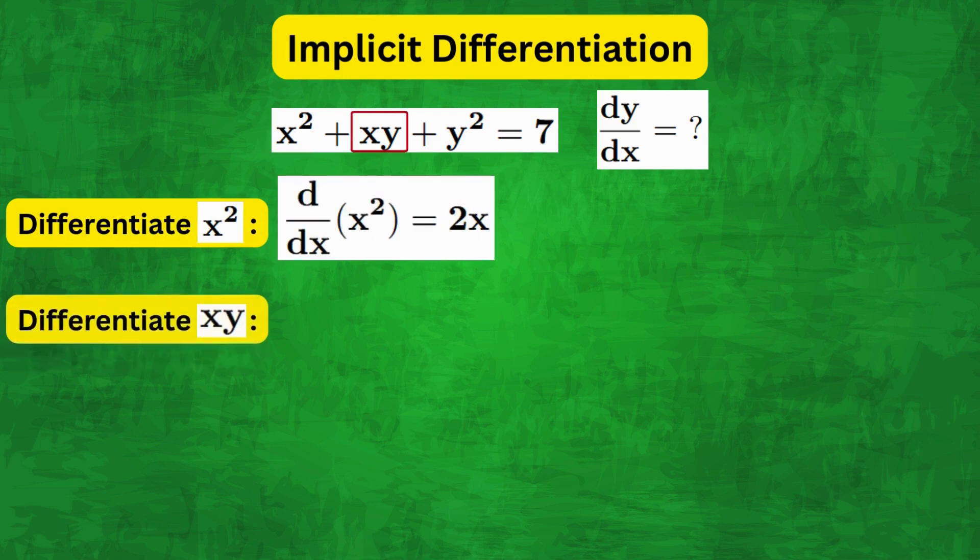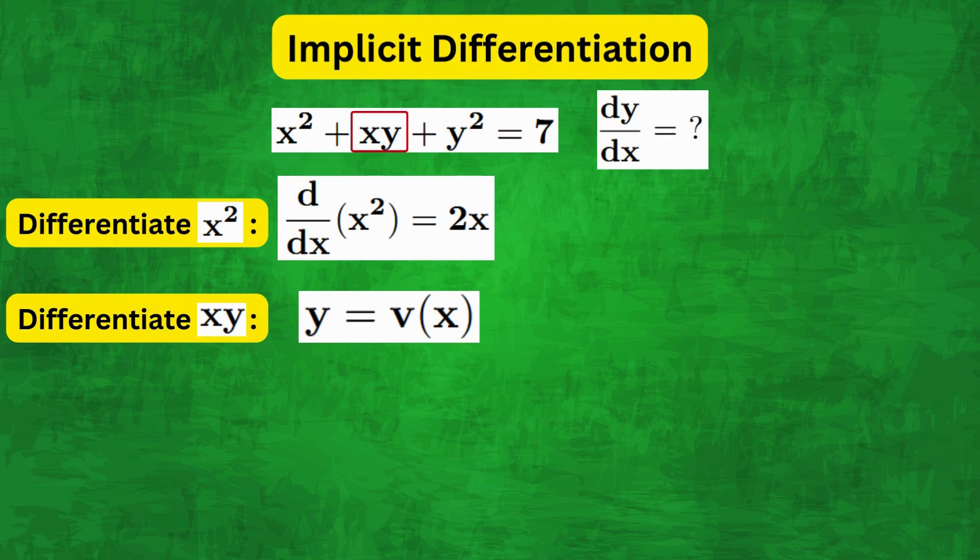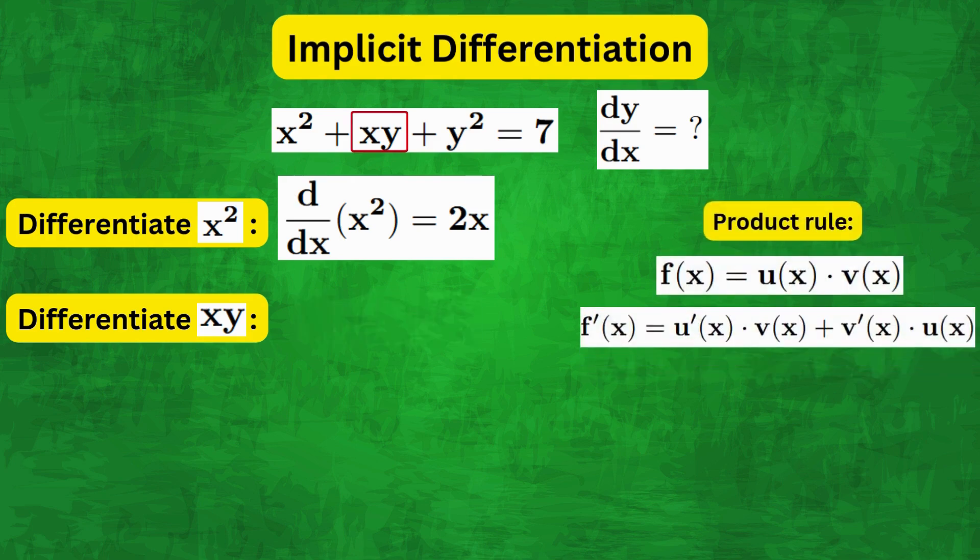Now for xy, remembering that y is a function of x, we therefore have two functions of x multiplying together. So we need to use the product rule, which is shown here.